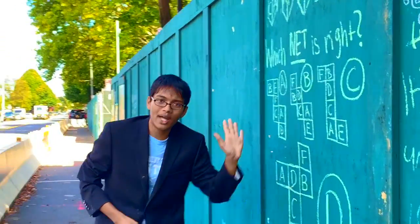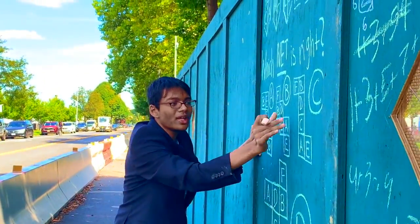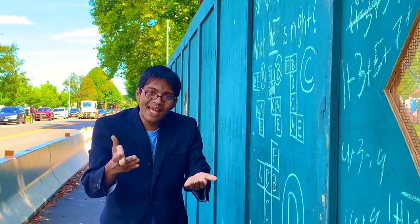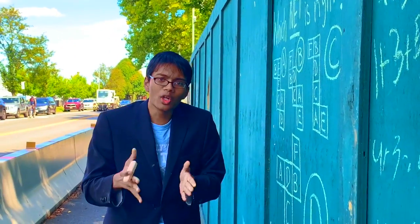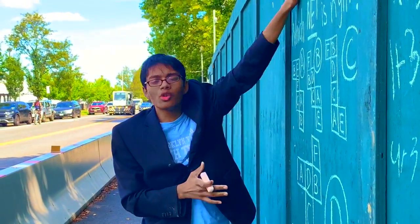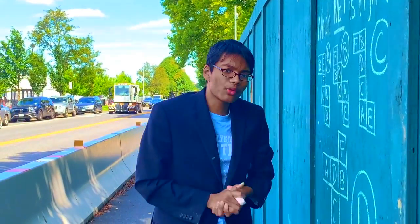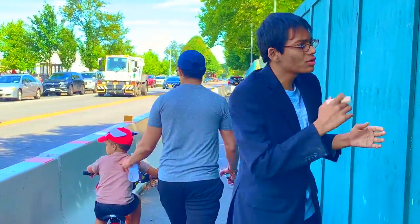Which one of the four choices — A, B, C, or D — is correct? The key to answering these types of questions is trying to analyze some kind of symmetry in the geometrical perspective — for example, looking at opposing faces or faces that two sides share.